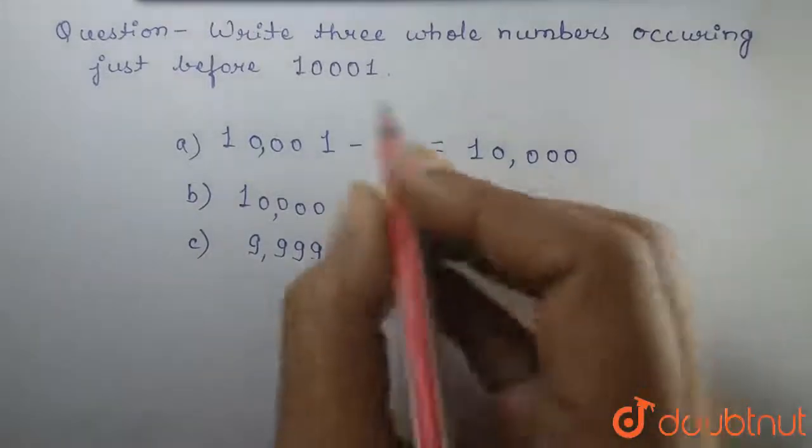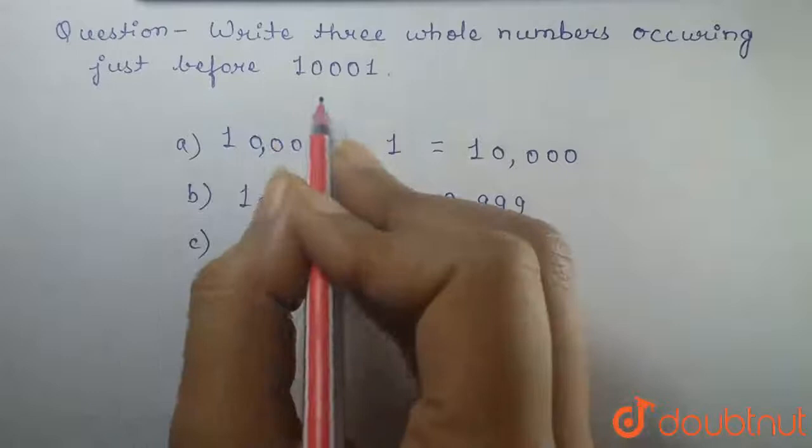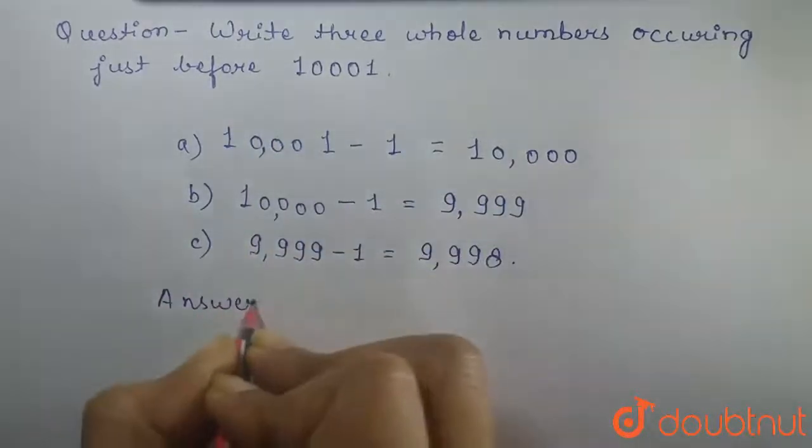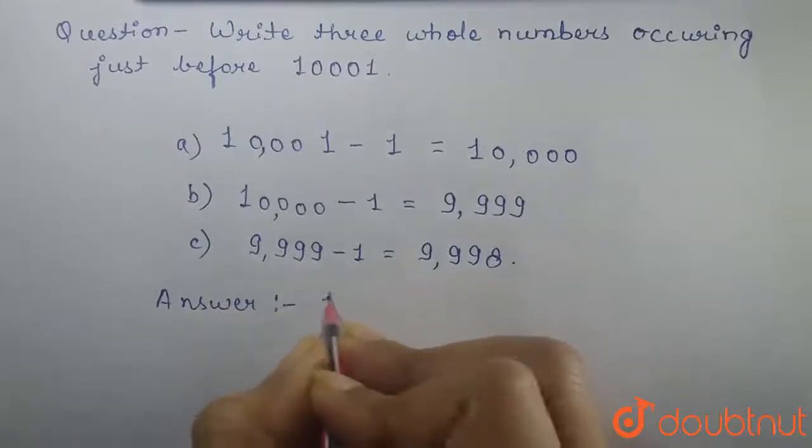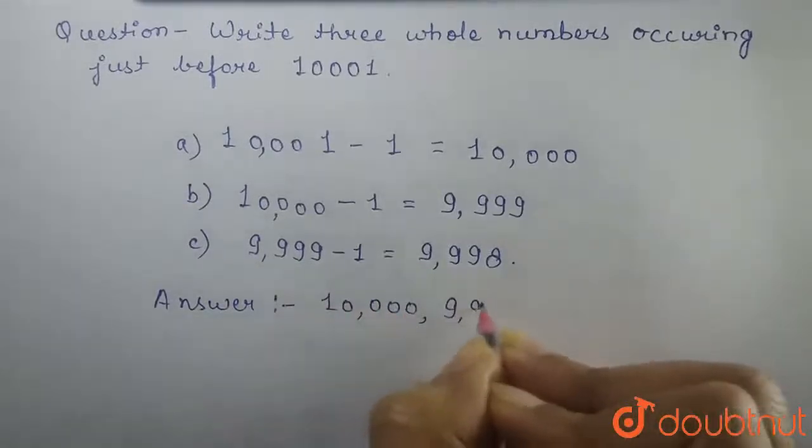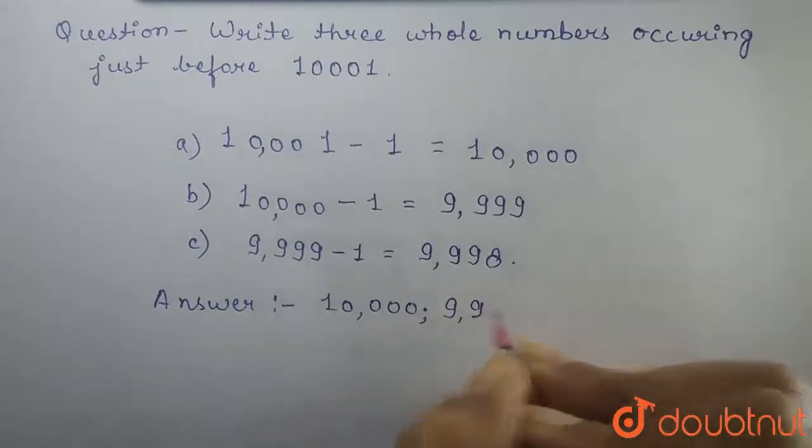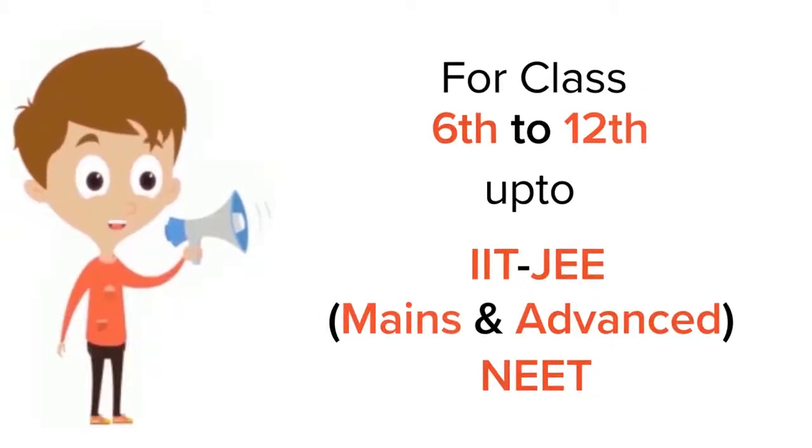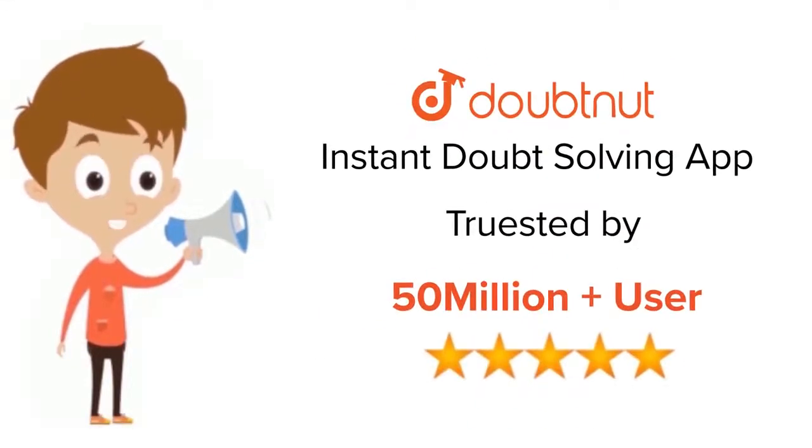So our final answer: the three whole numbers occurring just before 10001 are 10,000, 9,999, and 9,998. Hence this is the answer. For class 6 to 12, IIT-JEE and NEET level, trusted by more than 5 crore students.